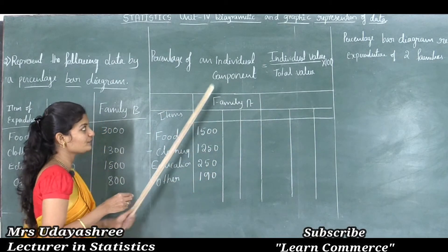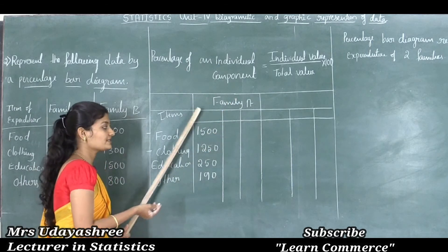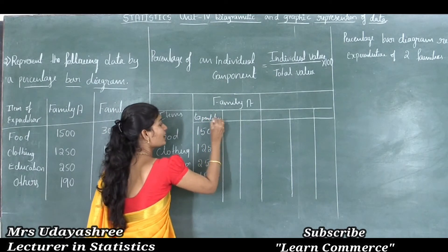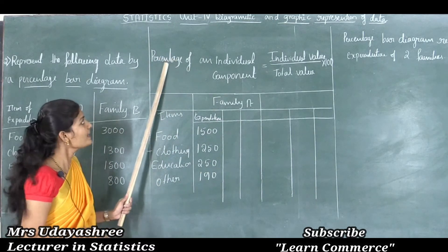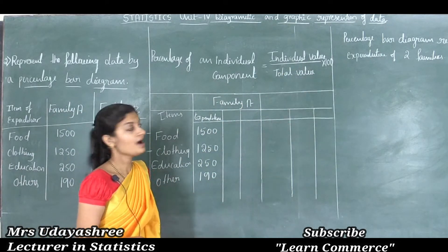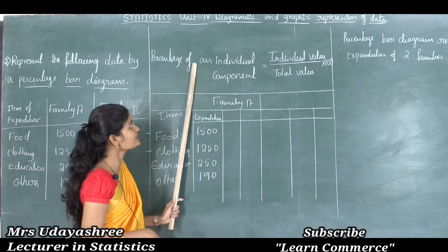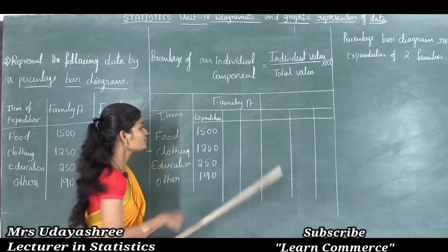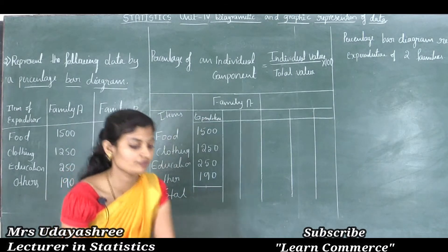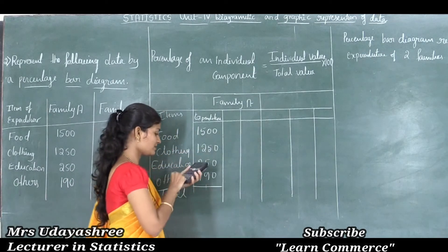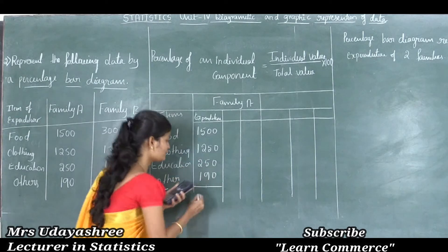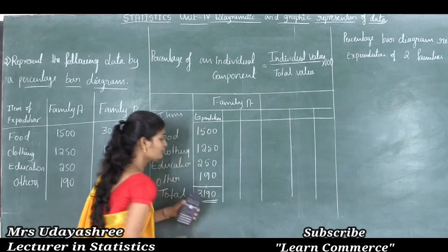To convert these expenditures into percentage, we use the formula: percentage of an individual component = (individual value ÷ total value) × 100. First we need to find the total value for family A: 1500 + 1250 + 250 + 190 = 3190. So the total value is 3190.